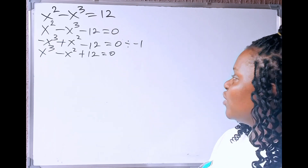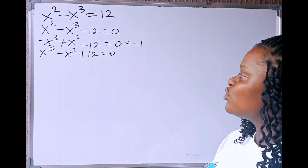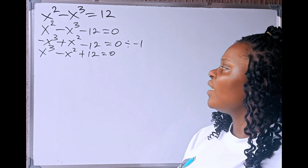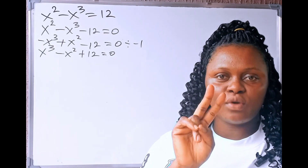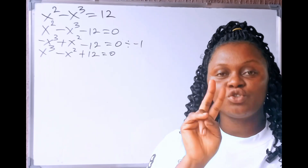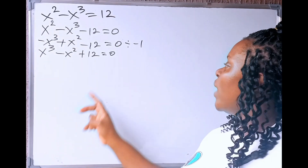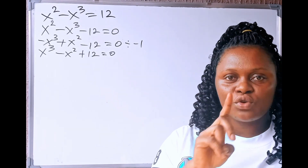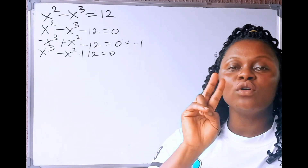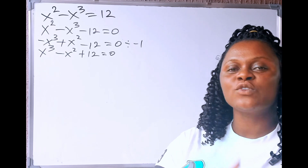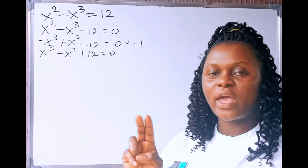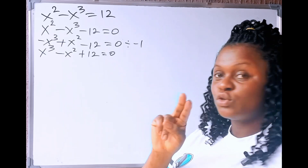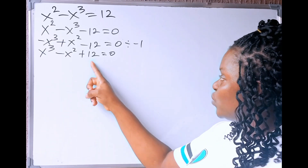Now, we can solve for the value of x. For us to solve for x, we are going to first find two numbers that when we add them together will give us 12. But in those two numbers, we have to consider the one that has cube and the one that has square, because there are many numbers that we can add together to give us 12.